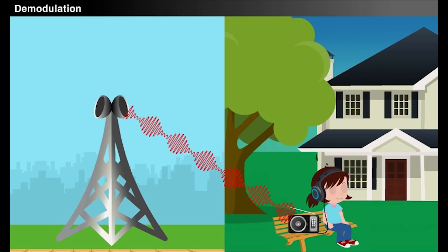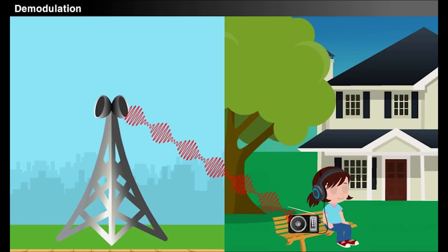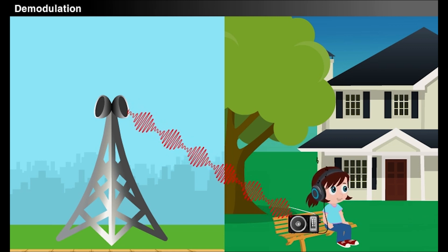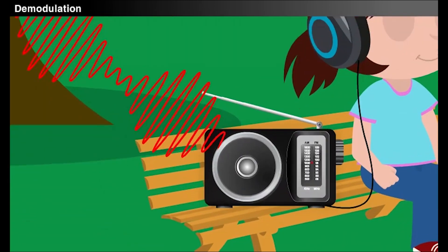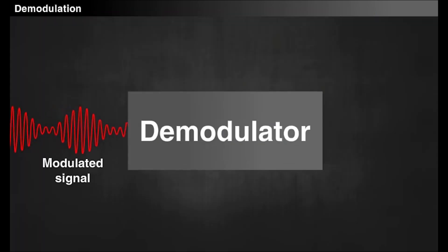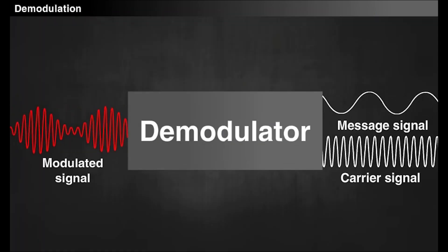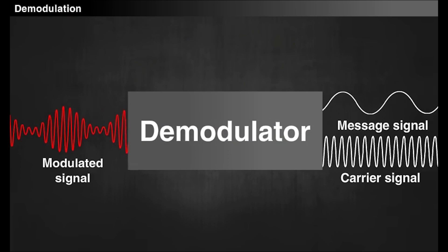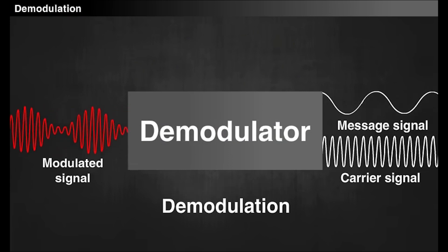When the modulated signal reaches the receiver, it is necessary to separate the message signal from the carrier signal. This process of recovering the low frequency message signal from the modulated signal is called demodulation.